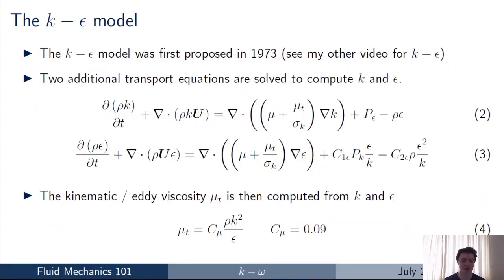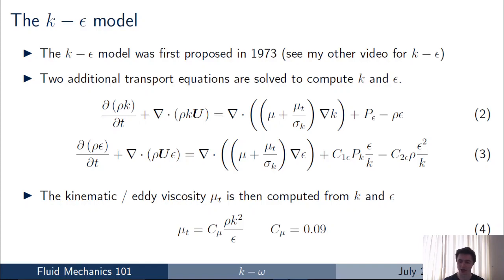To motivate this talk, I'll start with a brief reminder of the k-epsilon model, which is probably the most popular turbulence model used today. The k-epsilon model was first proposed in 1973. In the k-epsilon model, we solve two transport equations to compute the turbulent kinetic energy k and the turbulence dissipation rate epsilon — equations two and three on the slide. Once we've solved these, we use equation four to compute mu_t, substitute it back into the momentum equations, and the system is fully closed.